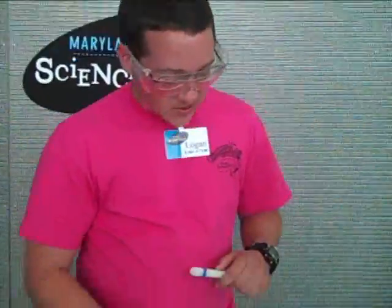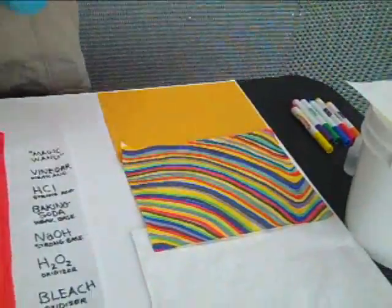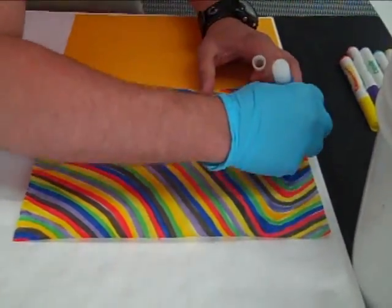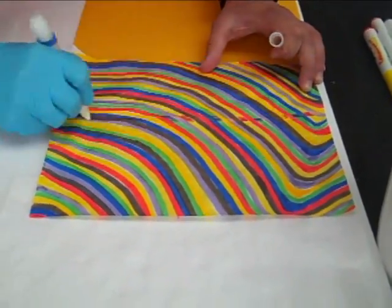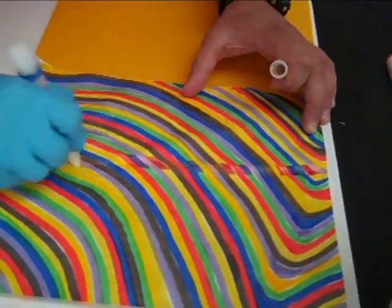So what we've got here is some colors on a paper from the markers. And we're going to see the original line from the color change marker, the magic wand.